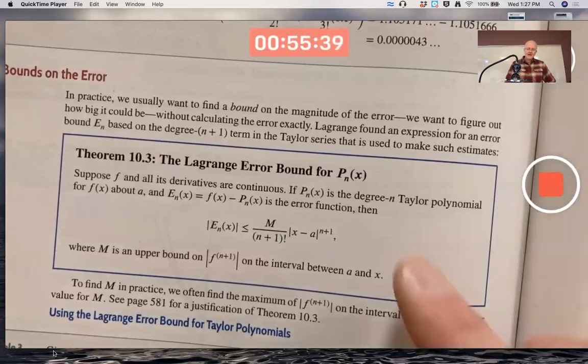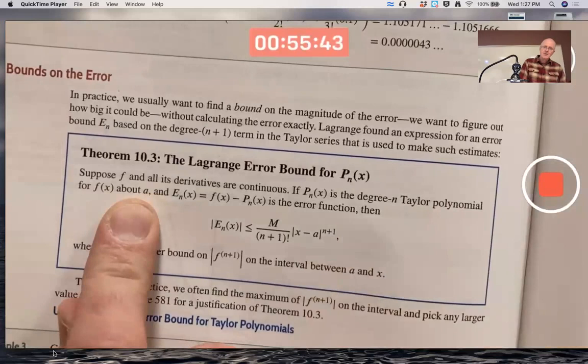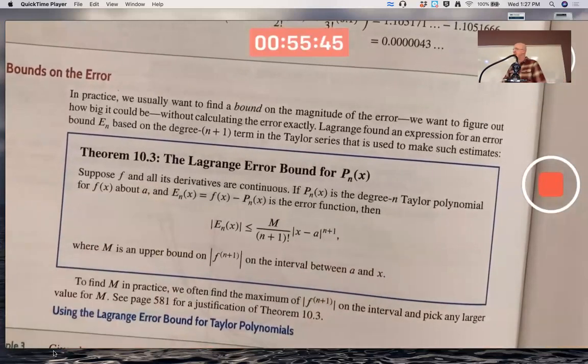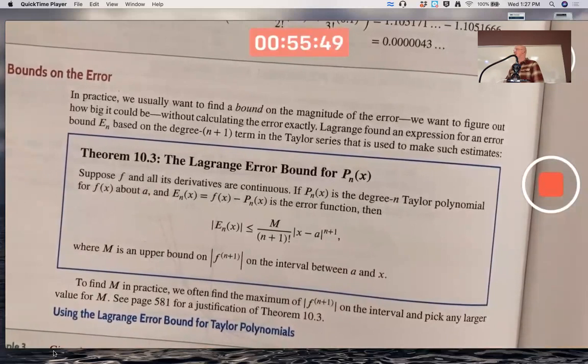Let p_n of x be the degree n Taylor polynomial for f of x about a, where in this theorem a could be something other than zero, but we usually do a equals zero.